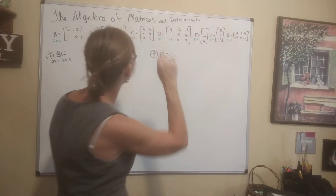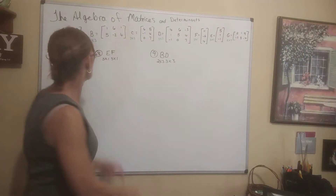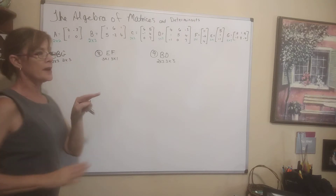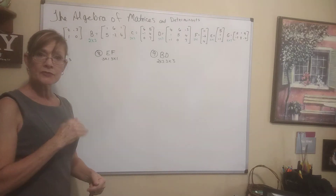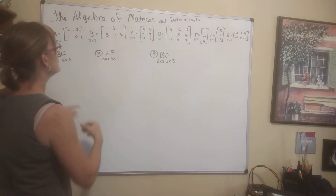Algebra of Matrices and Determinants, Part 2. We're asked to multiply, in number 7, matrix B times matrix G.